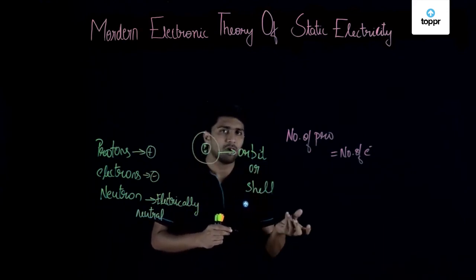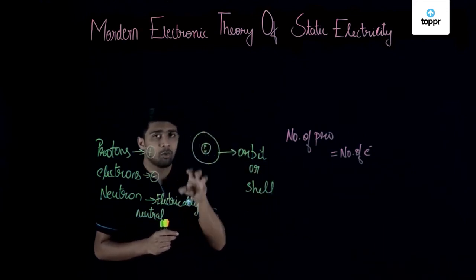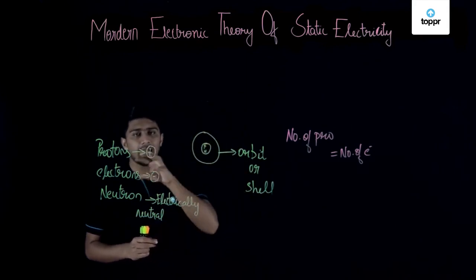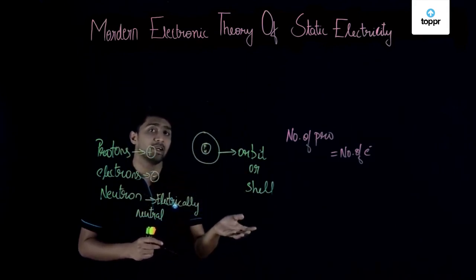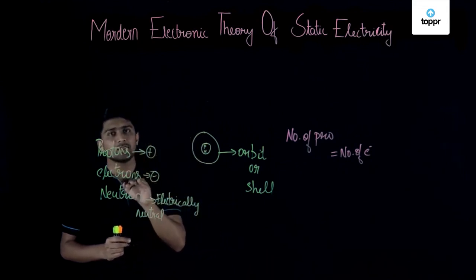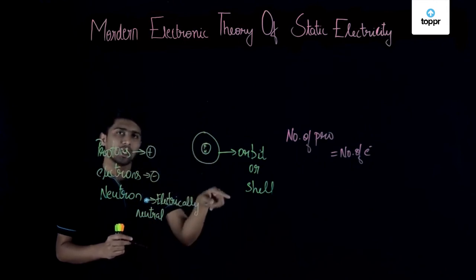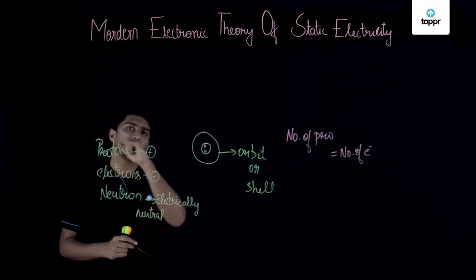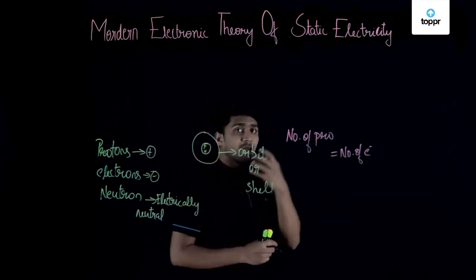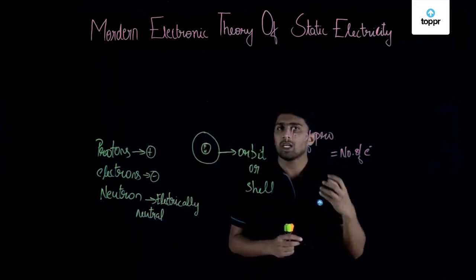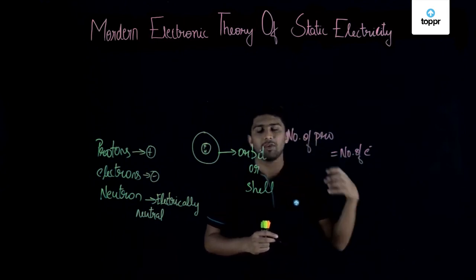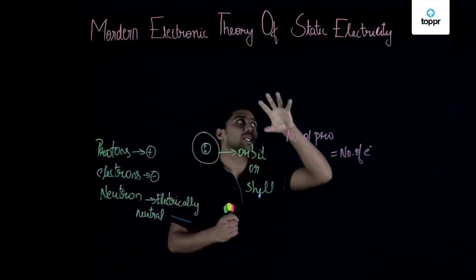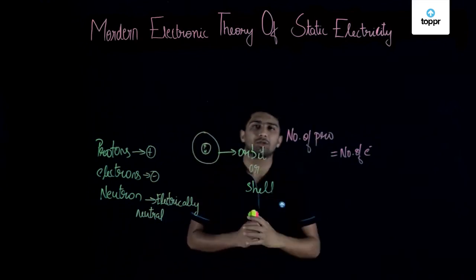When a body accepts electrons, the number of electrons will be more, making it negatively charged. At the same time, the atom or body which donated the electron will have more protons than electrons — since it gave away one electron to the neighboring atom — making it positively charged. So, students, we have now understood the theory of static electricity and how we can make use of it.